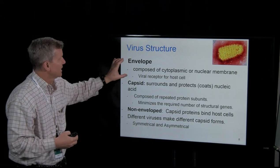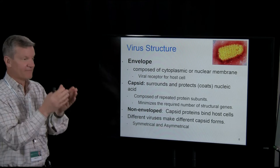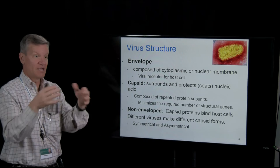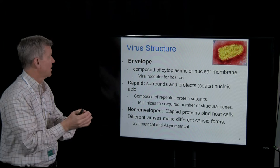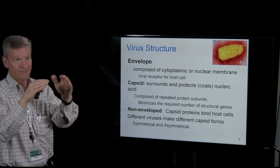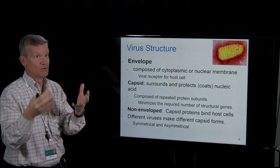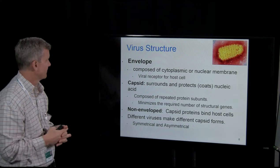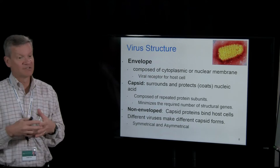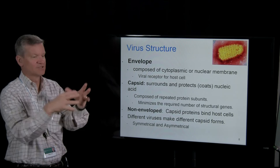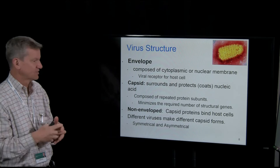Many viruses have envelopes composed of whatever membrane the virus budded from. If the virus replicates in the nucleus and buds from the nuclear envelope, it will have an envelope composed from the nucleus. If it buds from the cell membrane, it will have an envelope composed of the cell membrane plus other viral proteins. Many viruses are non-enveloped — in that case the virus doesn't bud, it just bursts from the cell. So much virus assembles that the cell bursts and the viruses are free to infect other cells.